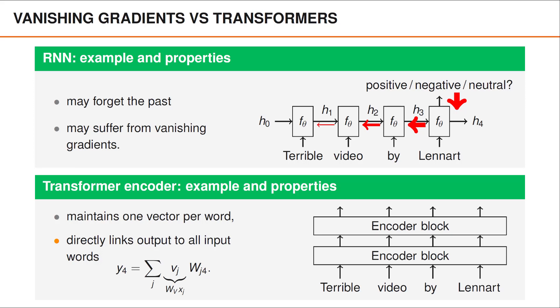We have that y4 is the sum over j of vj times wj4, where vj is simply wv times xj, and v1 is wv times x1.